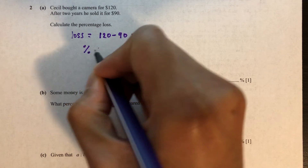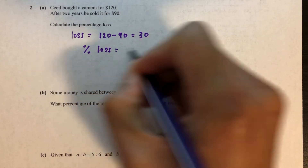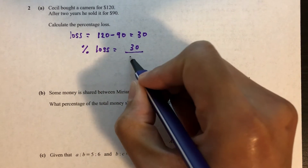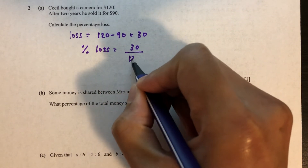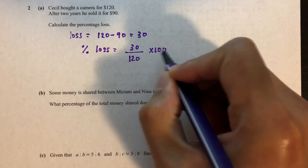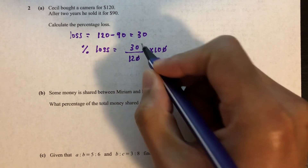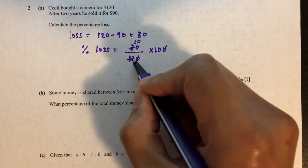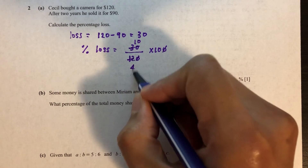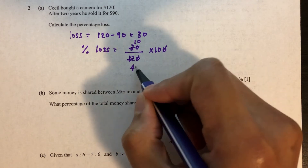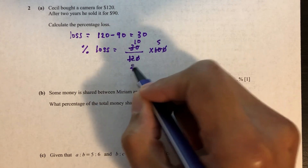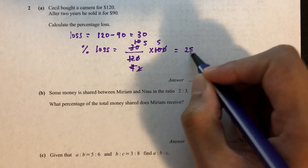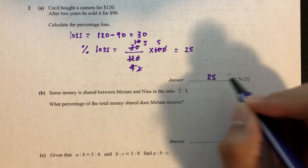Percentage loss is the loss over the initial amount times 100, which is 30 over 120 times 100. Simplifying: divide by 3 gives 10, divide by 3 gives 4... so 5 times 5 is 25. So 25% is your answer.